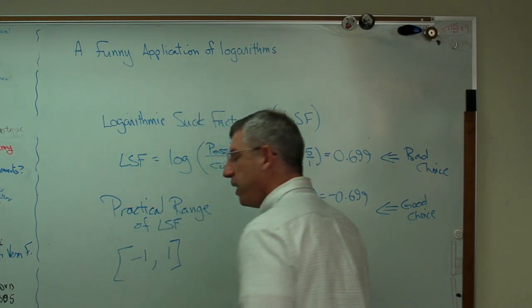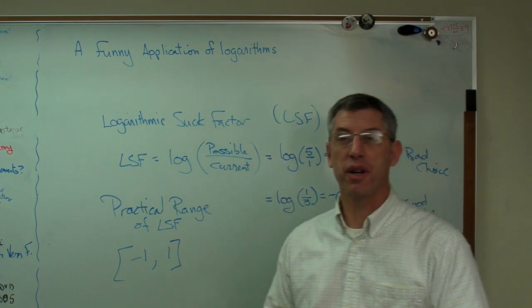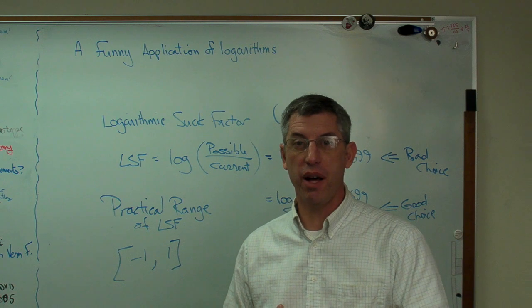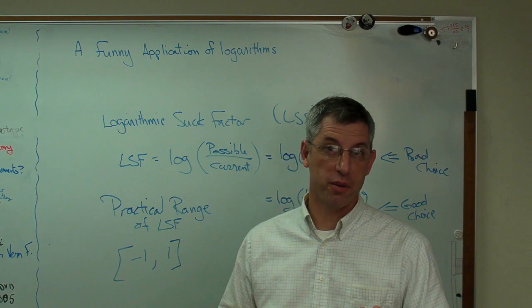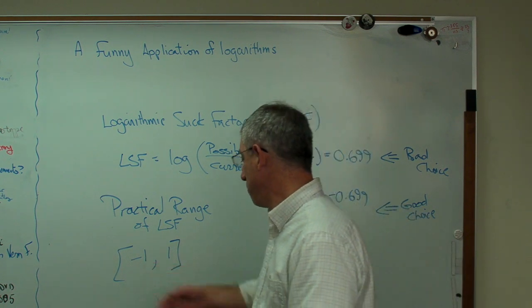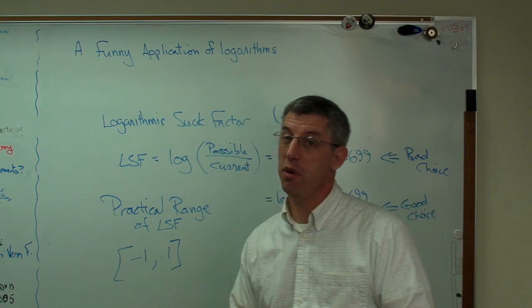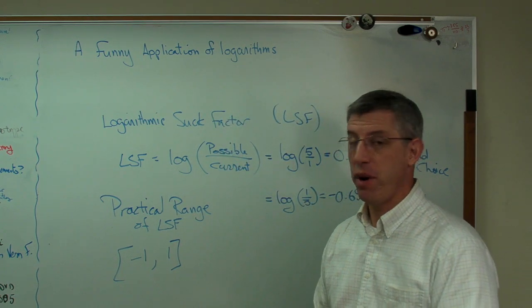practical range of LSF is minus 1 to 1. That gives you a scale of allowing your current choice to be 10 times worse or 10 times better than your possible choice. It could go outside of that, but practically speaking, an LSF of minus 1 to 1 is about it, in my view.